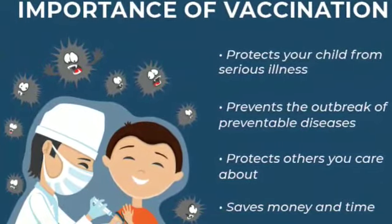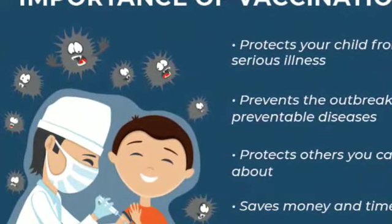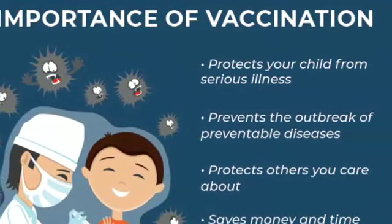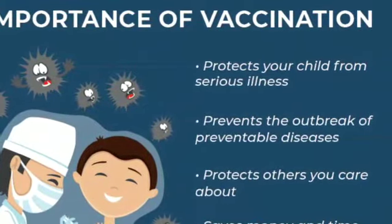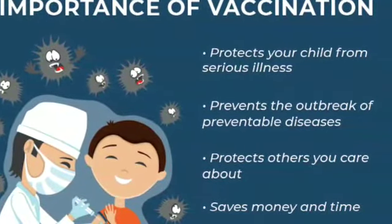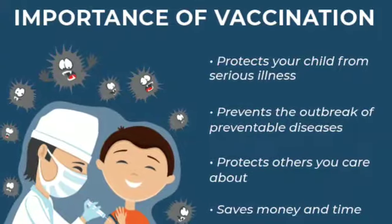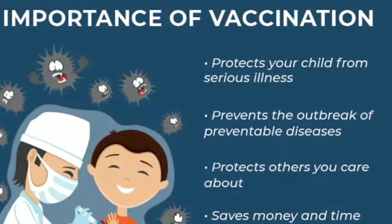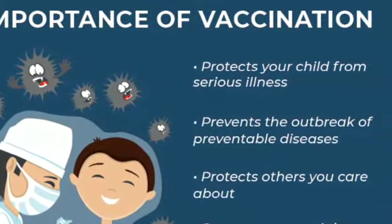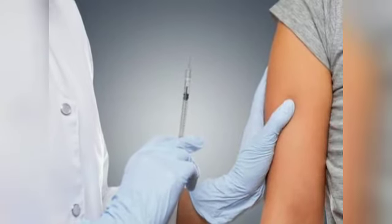Immunization can save your money and family time. A child with a vaccine-preventable disease can be denied attendance at school or childcare facilities. Some vaccine-preventable diseases can result in prolonged disabilities and take a financial toll due to lost time at work, medical bills, or long-term disability care. In contrast, getting vaccinated is a good investment and is usually covered by insurance. Vaccinations are not just for children — adults need them too, depending on factors such as age, health conditions, travel plans, and personal vaccination record.